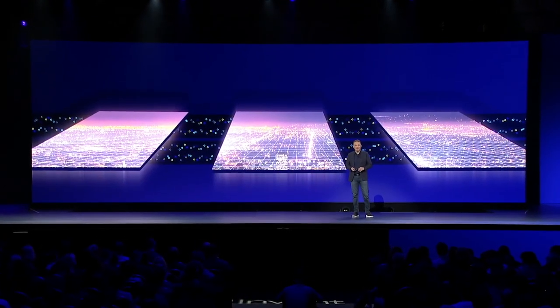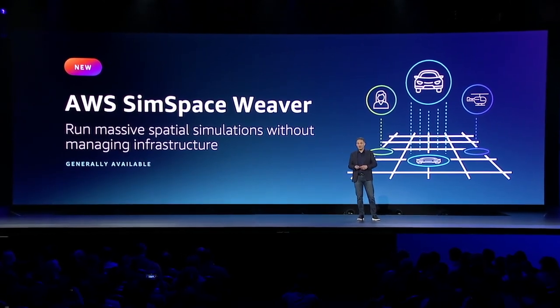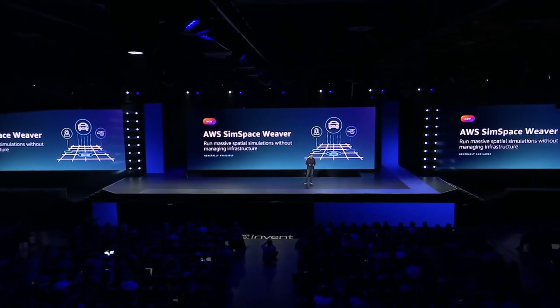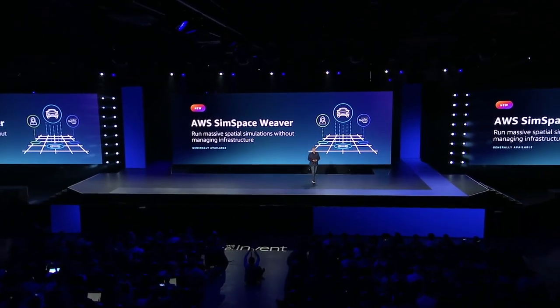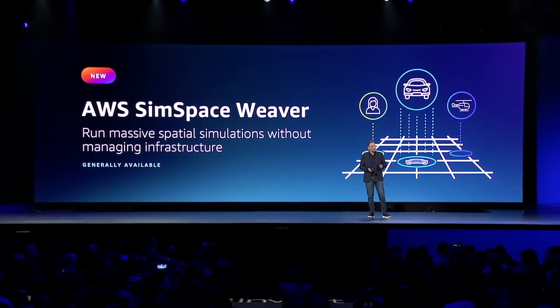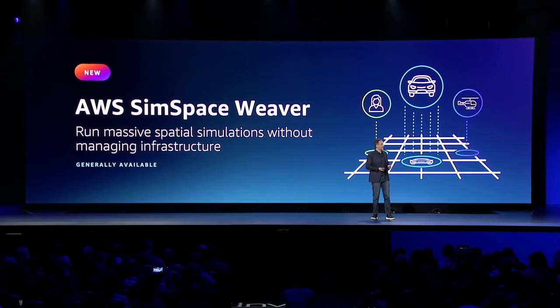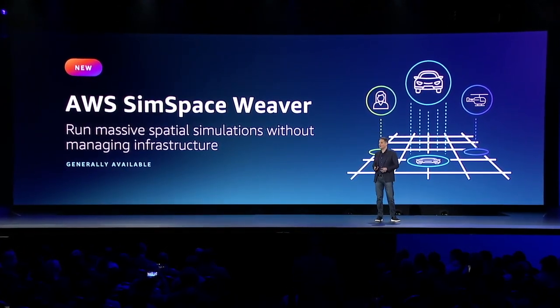Today I'm very excited to announce AWS SimSpace Weaver, a new managed service for running large-scale spatial simulations. With SimSpace Weaver, you can run large-scale simulations without being constrained by a single piece of hardware or having to manage the underlying compute, memory, or networking infrastructure. This means developers can spend more time building and understanding their simulations, and less time deploying and scaling them.